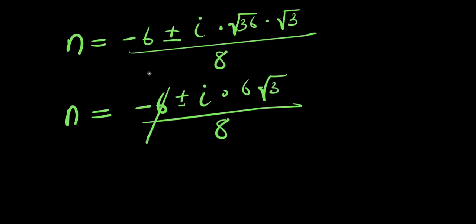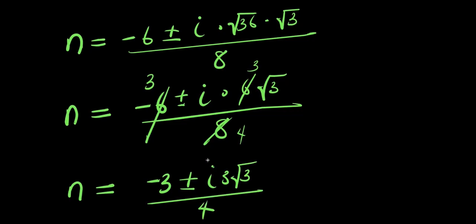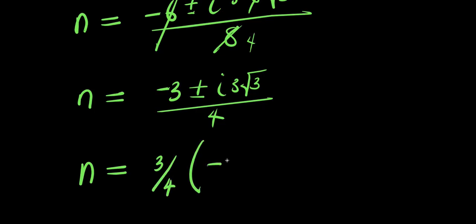Dividing numerator and denominator by 2, we get n equals negative 3 plus or minus 3i√3, all divided by 4. Factoring out 3/4, we have n equals (3/4) times (negative 1 plus or minus i√3).